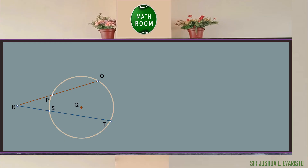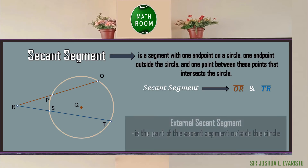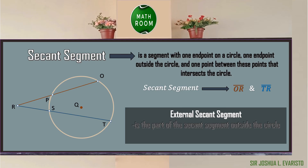A secant can also be in the form of a segment, called a secant segment. A secant segment is a segment with one endpoint on a circle, one endpoint outside the circle, and one point between these points that intersects the circle. In the given figure, we have two secant segments: the red one and the blue one, which are segment OR and segment TR. You also need to know about the external secant segment, which is the part of the secant segment outside the circle. The external secant segments are segment RP and segment RS.